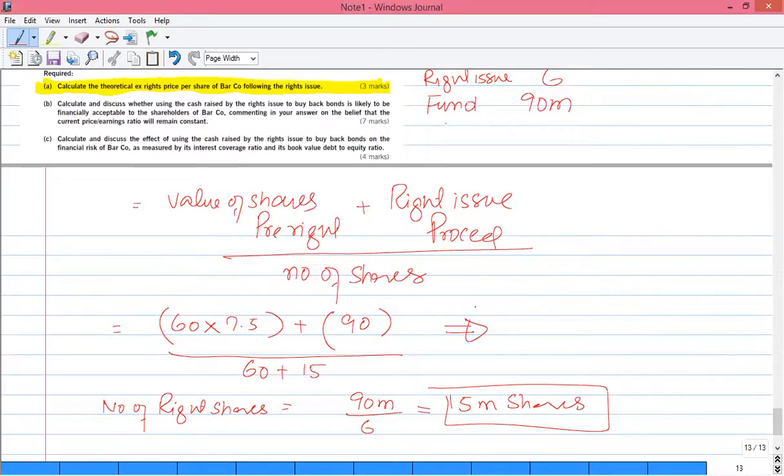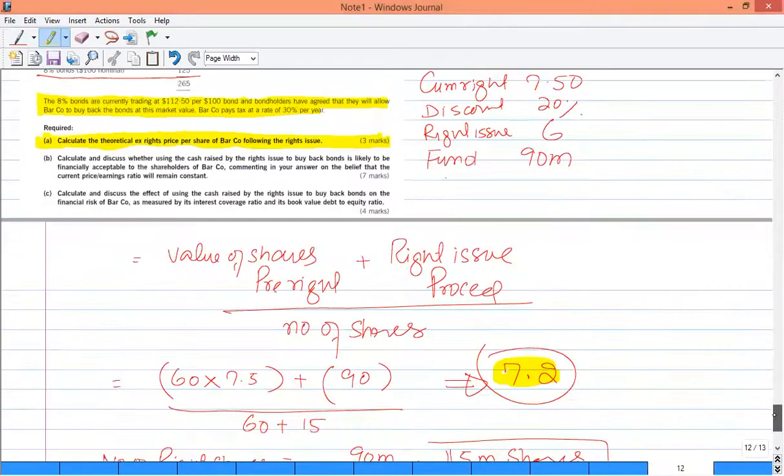So we will solve this. So 60 multiplied by 7.5 plus 90 divided by 75. The price was 7.5 and our ex-right price dropped by 7.2. This is a very easy part, the first part we have already done.